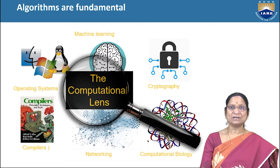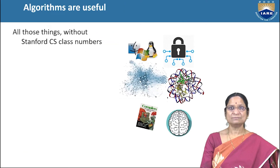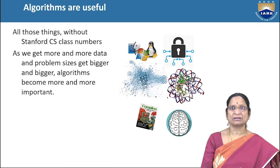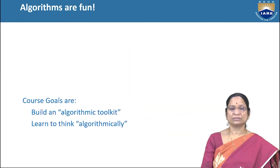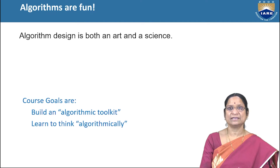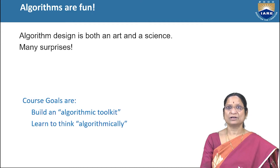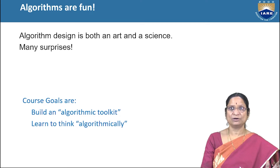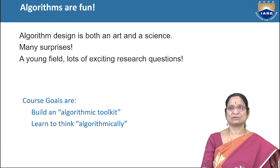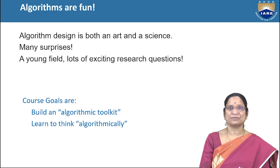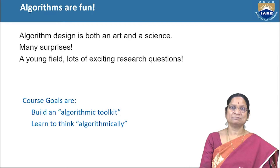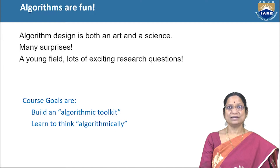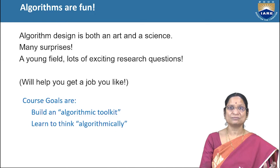Measurements of efficiency will also be discussed as part of this course. Algorithms are useful in all places — across all areas of computer science and even in various branches of engineering. Algorithm design is both an art and a science: it is a science because mathematical notations and logics are used, but efficient algorithms are designed by people who also have an artistic sense. It is a field with many exciting research questions and unsolved problems still available.